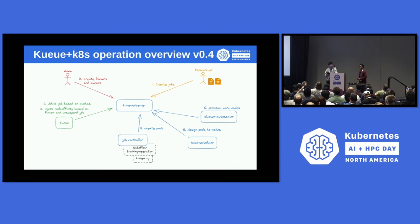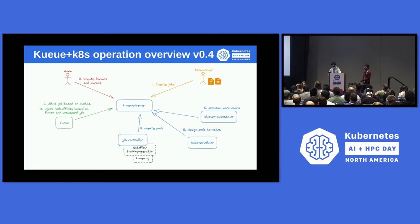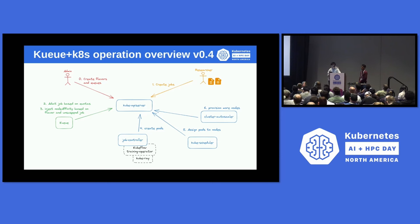I want to explain the differences in the Kueue operation flow between v0.4 and v0.5. Let me explain the flow in the previous version, pre-0.5. Kueue assumes there are cluster admins and cluster users — in this slide I've named the cluster admin just 'admin' and the cluster user 'researcher.' As preparation, the admin needs to define the cluster queue, resource flavor, and local queue, which sets the capacity queues.